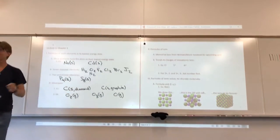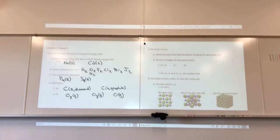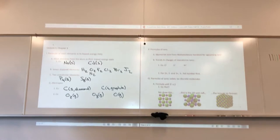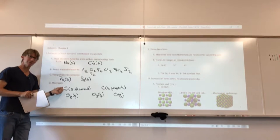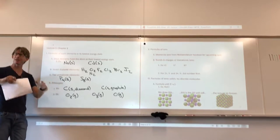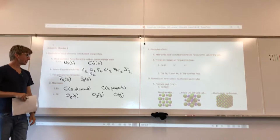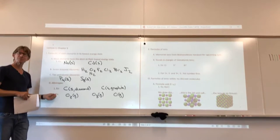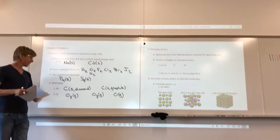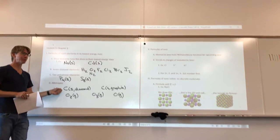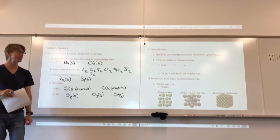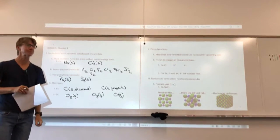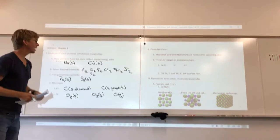Graphite or diamond — which is the lowest energy form of carbon? It is graphite, at room temperature and pressure. Although at the pressure and temperature at which diamonds were formed in the Earth's crust, diamond was lower in energy, which is why it formed. Again, peeling back those layers.